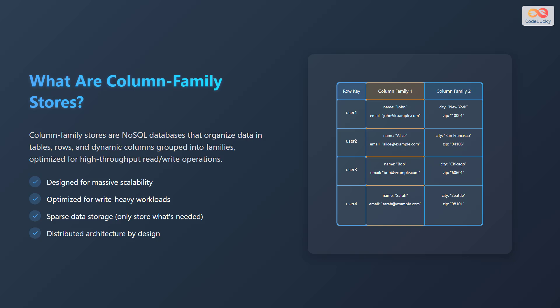In the diagram, you can see a table consisting of row keys, column family 1 and column family 2. The data corresponding to these families and keys are also shown in the table.